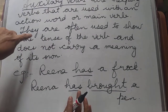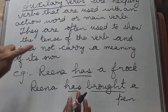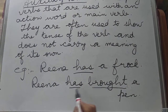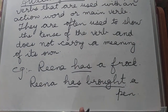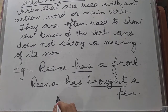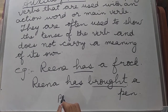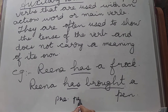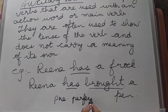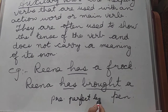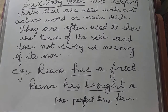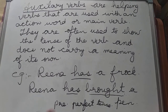Auxiliary verbs are often used to show the tense of the verb and do not carry a meaning of their own. So what tense is 'Rina has brought a pen'? This is present perfect tense. So now you know what auxiliary verbs are.